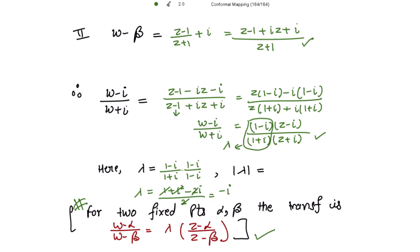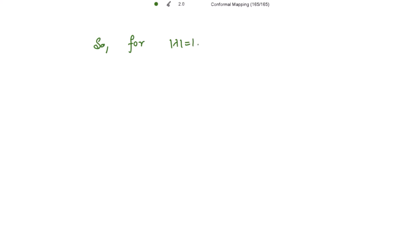So if you take the modulus of lambda, you get mod of minus iota, and mod of minus iota is equal to 1. And whenever you have mod of lambda equal to 1, the transformation is elliptic. So for mod lambda equal to 1, the transformation is elliptic.